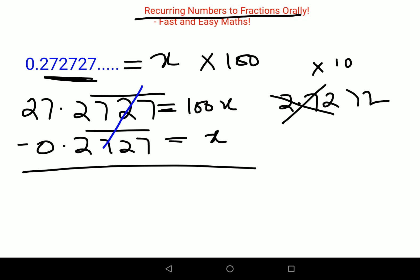When you do the subtraction, you will see that the recurring part is getting cancelled. So you are left with 27 equals 100x minus x equals 99x. Therefore, the value of x is 27 upon 99.